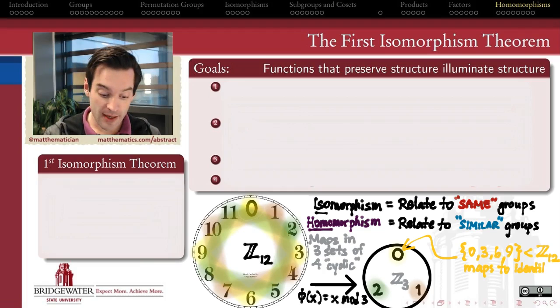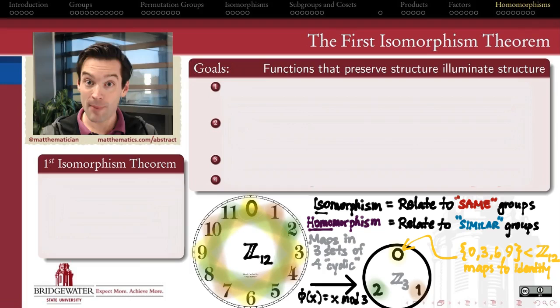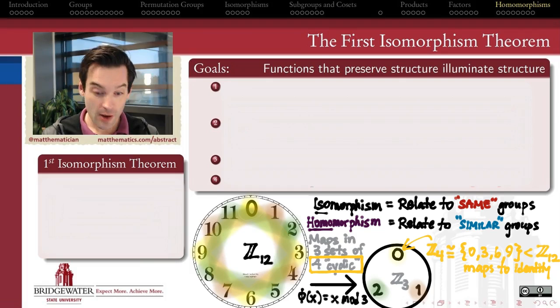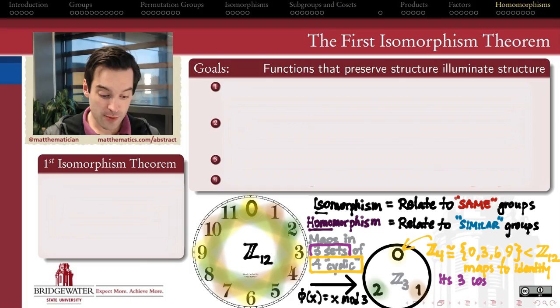Notice the key role here that's being played by the identity element 0 in the target group Z3. This identity element's preimage—0, 3, 6, and 9—that's a subgroup of Z12. It's a very important subgroup that we call the kernel of this homomorphism. If there's one concept that shines above all the others in this week's material, it is the idea of a kernel. It's the most important thing you can know about a homomorphism: what is its kernel, what is it sending to the identity element in the target group? Because that kernel in this example has four elements in it, it's isomorphic to a cyclic group of order 4, so it's isomorphic to Z4.